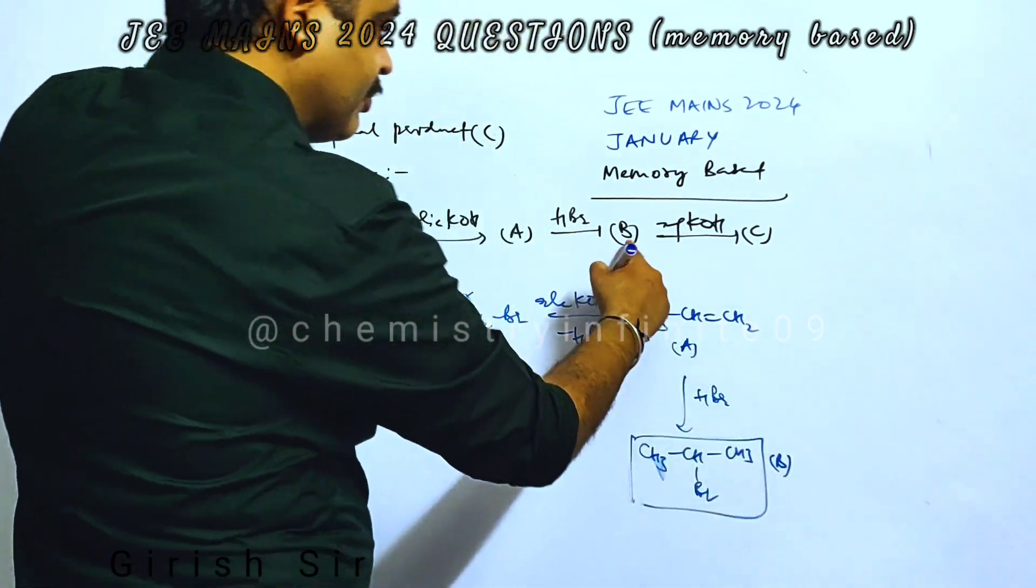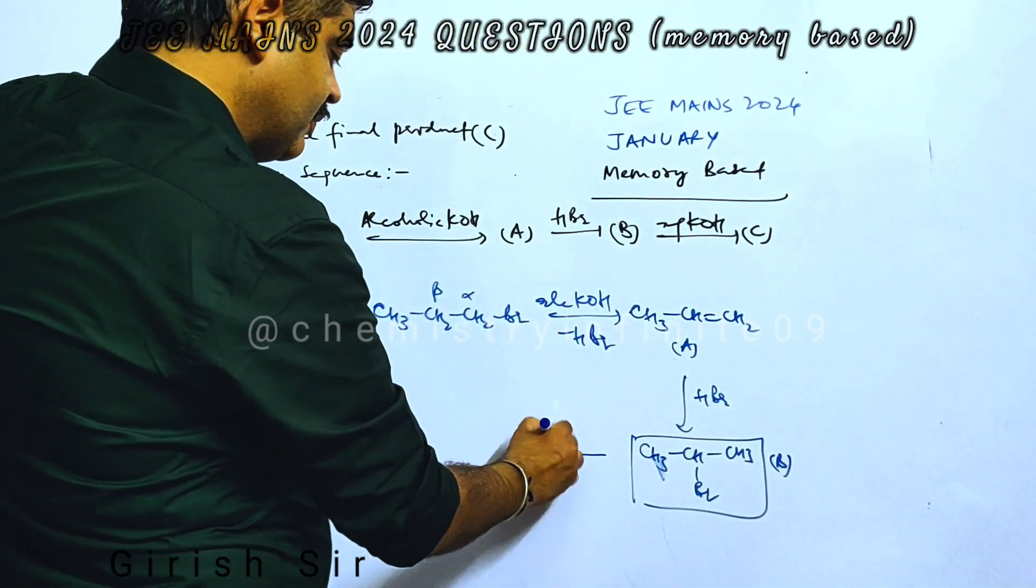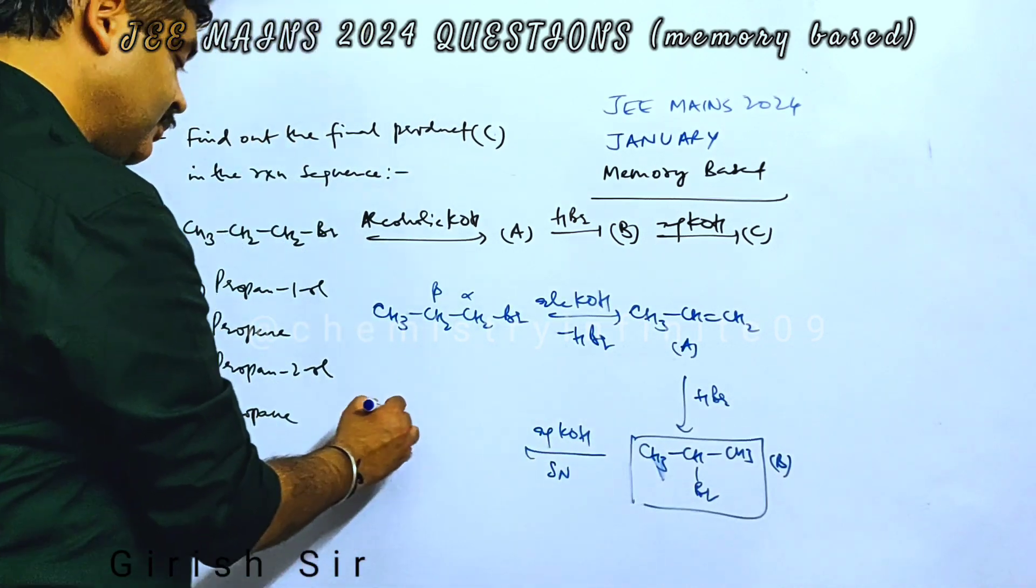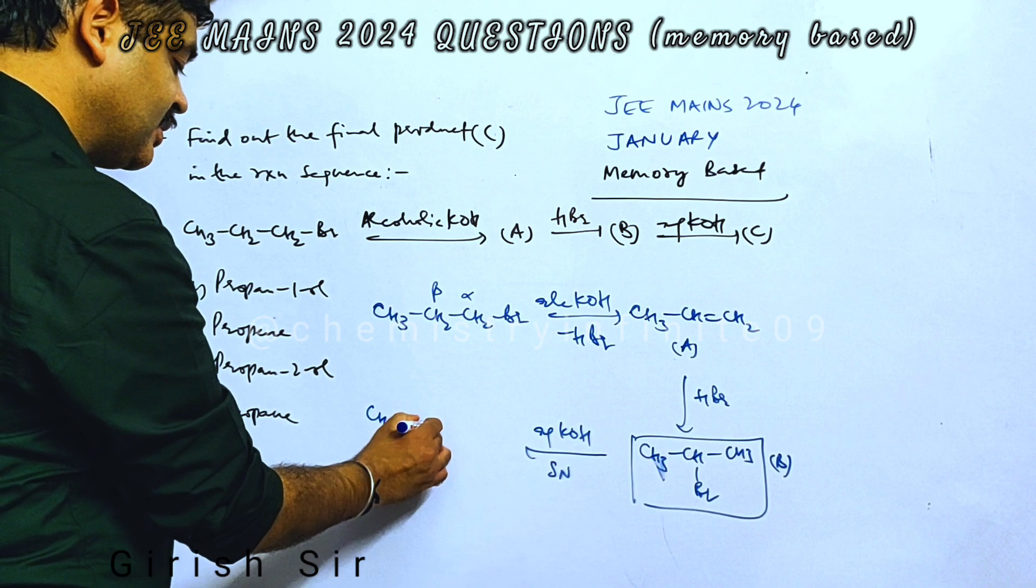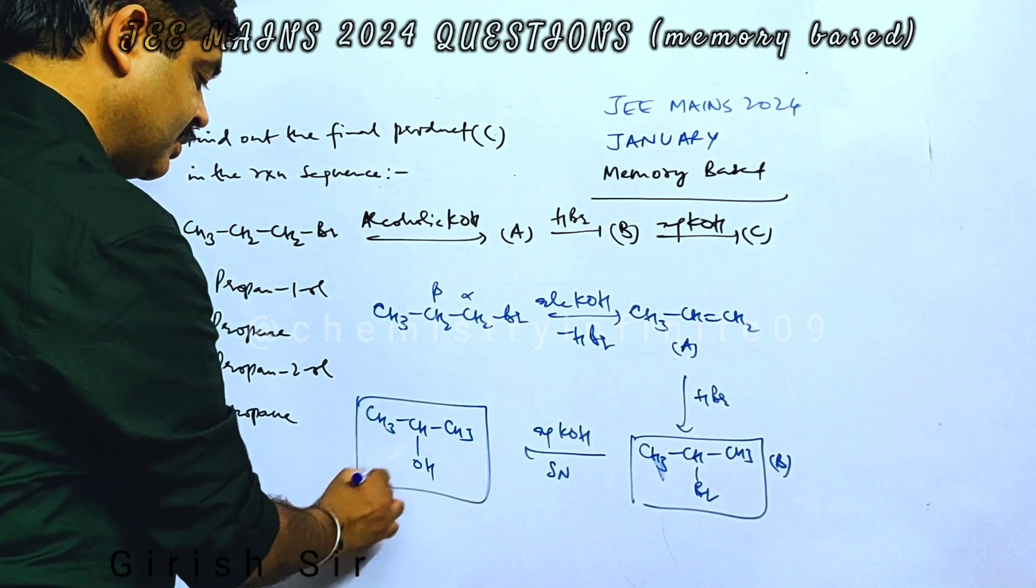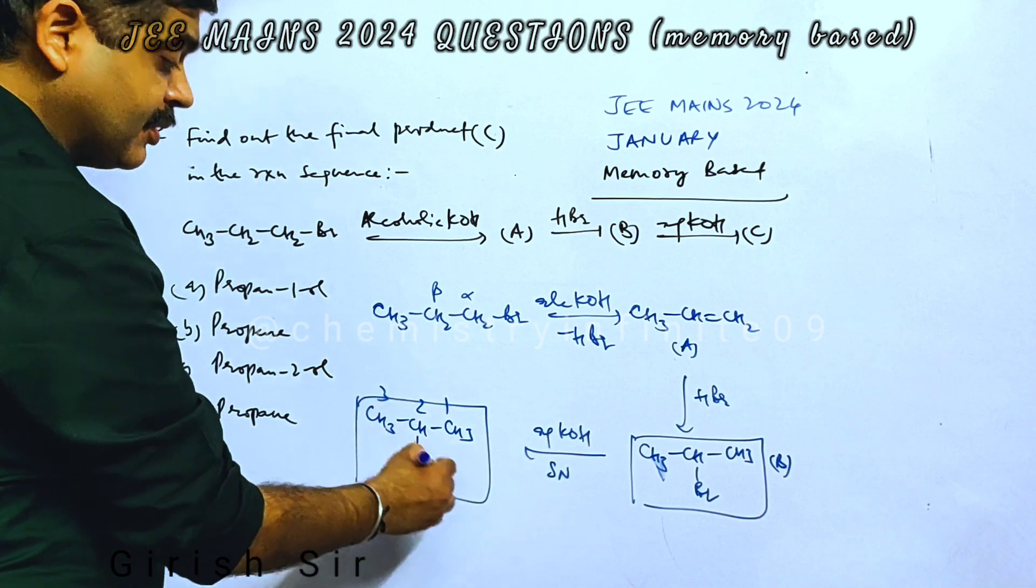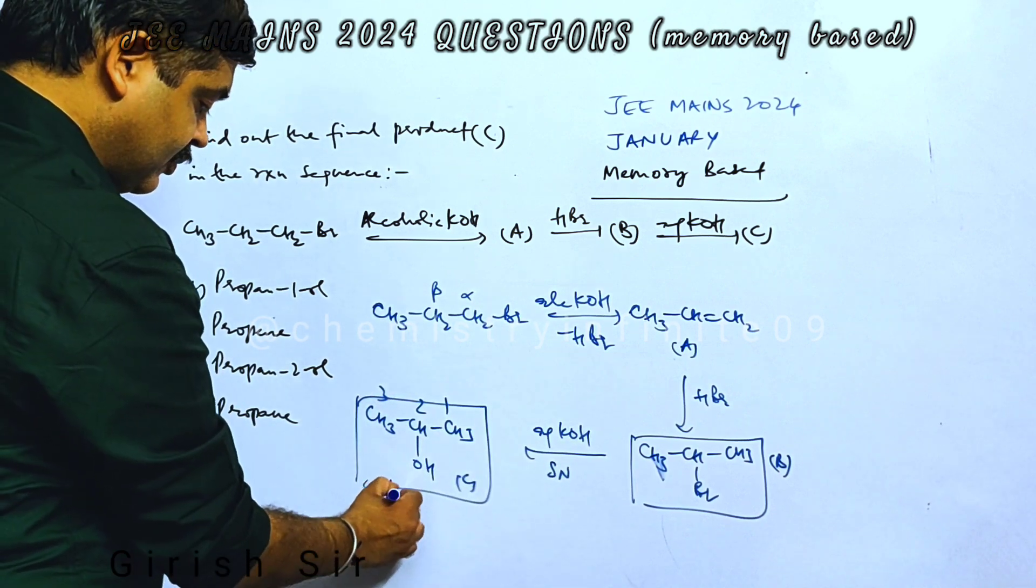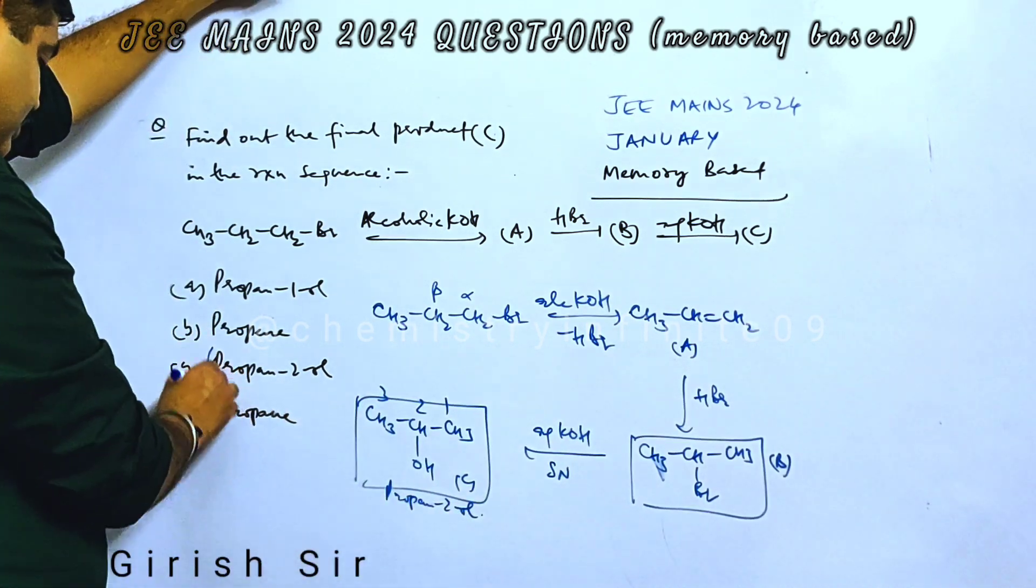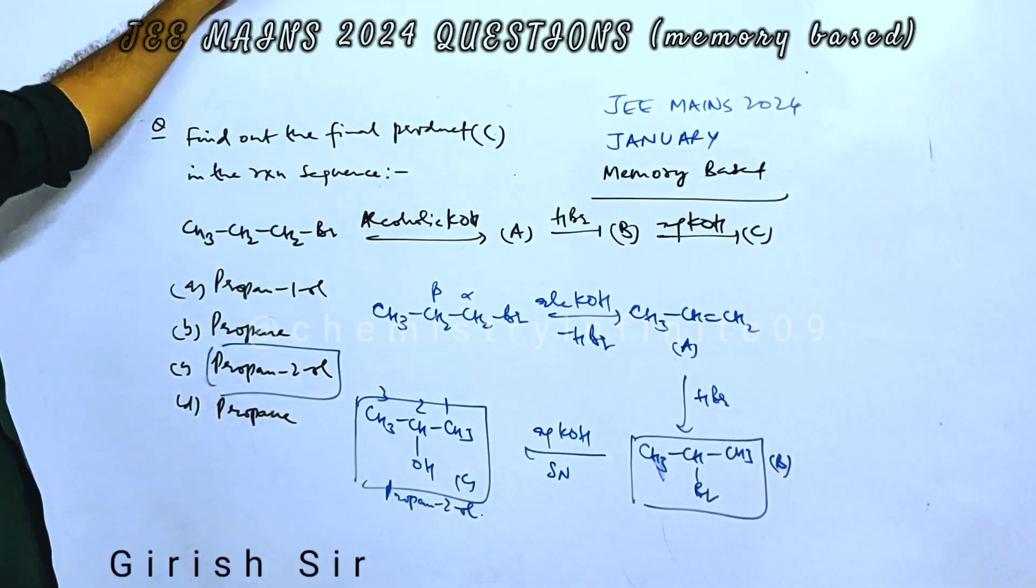This compound B is further reacted with aqueous KOH. With aqueous KOH, nucleophilic substitution takes place, so that bromine gets replaced with nucleophile hydroxyl ion. This is the final product C. Propane-2-ol would be the answer. Thank you.